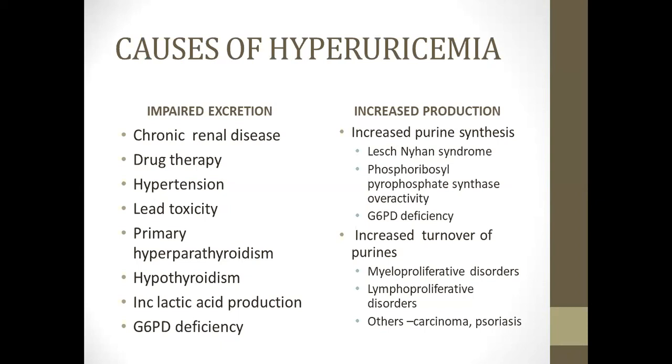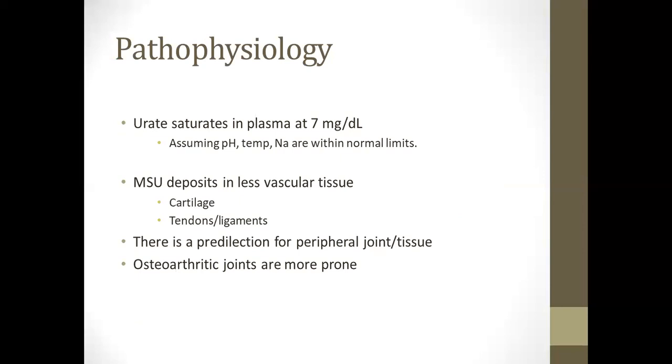The causes of hyperuricemia can be impaired excretion from chronic kidney disease, drug therapy, hypertension, lead toxicity, primary hyperparathyroidism, hypothyroidism, G6PD deficiency, and increased production from increased purine synthesis as in Lesch-Nyhan syndrome, or increased turnover of purines in myeloproliferative and lymphoproliferative disorders, or other conditions like psoriasis.